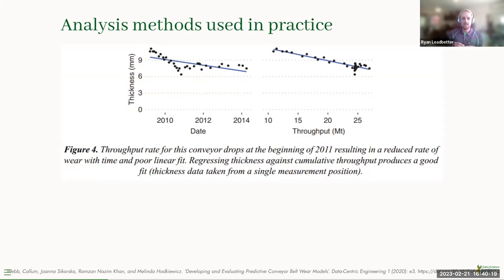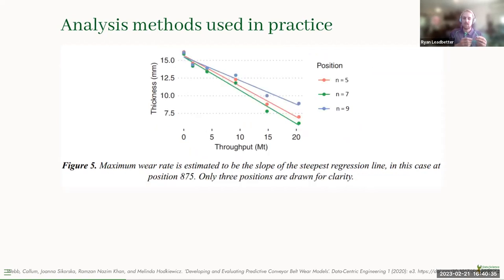This is a paper out of UWA that probably reflects best practice in industry. Analysis is usually done on throughput — the amount of tons across the conveyor belt — as a proxy for utilization, rather than using calendar time. They do a linear regression for each of the N measurement locations across the width of the belt, take the steepest slope, and extrapolate to when it will hit the soft failure threshold. As you may think, this is oversensitive to outliers, especially when you don't have a lot of data. There's no uncertainty quantification, and the whole belt is summarized by just one point.